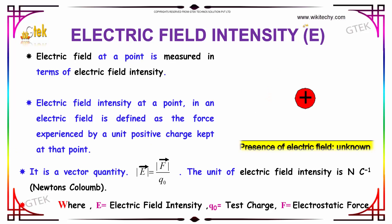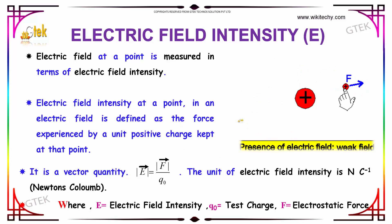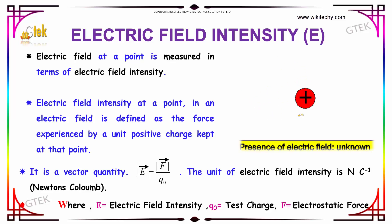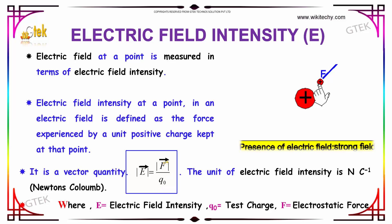Let us discuss about the electric field intensity, which is denoted by E. The electric field at a point is measured in terms of electric field intensity. It is defined as the force experienced by a unit positive charge kept at that point. This is a vector quantity, given by E = F / Q0. The unit of electric field intensity is Newton per Coulomb, that is NC⁻¹, where E is the electric field intensity, Q0 is the test charge, and F is the electrostatic force.